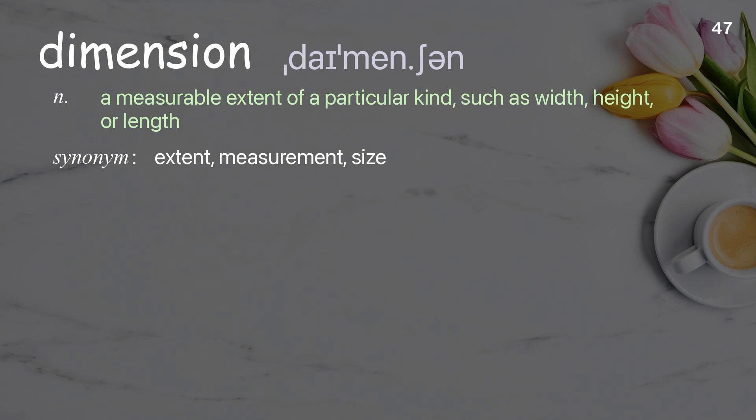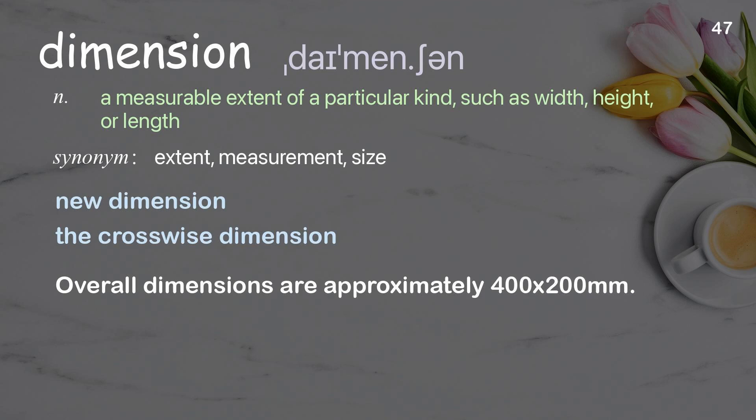Dimension. A measurable extent of a particular kind, such as width, height, or length. Examples: New dimension. The crosswise dimension. Overall dimensions are approximately 400 by 200 millimeters.